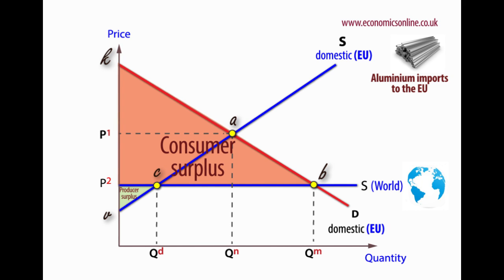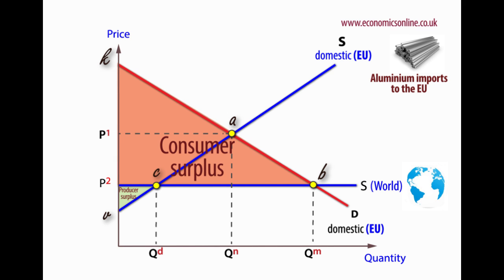However, EU producers suffer as their producer surplus falls from V, P1 and A to V, P2 and C.